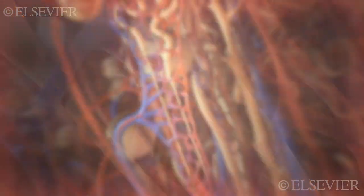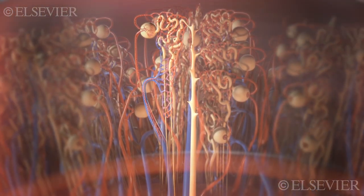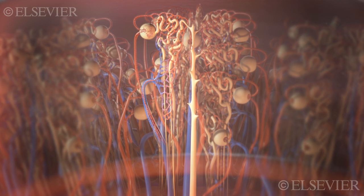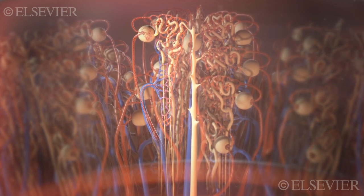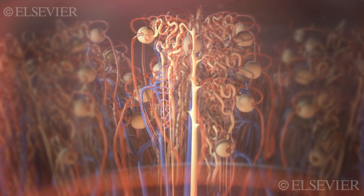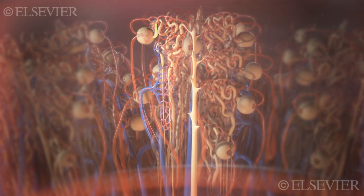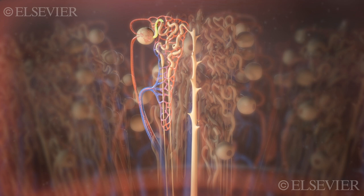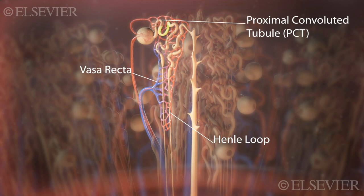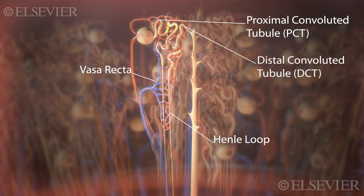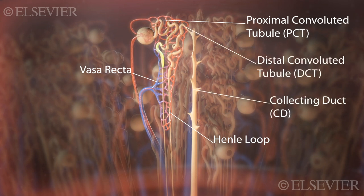This process, called tubular reabsorption, occurs mostly in the PCT. More wastes and certain ions can move from the blood in the peritubular capillaries and vasa recta into the filtrate in the PCT, loop of Henle, DCT, and the collecting duct in a process called tubular secretion.